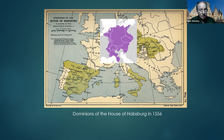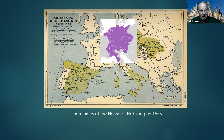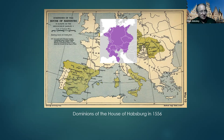Martin Luther escaped execution largely because he received protection from one of these princes, who saw advantage in facilitating a religious split with Catholicism, since it would reduce the power of the Catholic Habsburg Emperor. It's been said that the Holy Roman Empire was neither holy nor Roman nor an empire, and there's considerable truth in that — the term should suggest its fragmented nature.